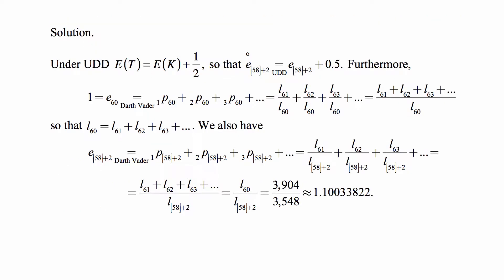You may be confused by the fact that you have the discrete and continuous life expectancy mixed up in the problem. But there's nothing to worry about because under uniform distribution of deaths, E(T) = E(K) + 1/2.